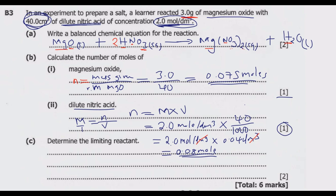Question (c): determine the limiting reactant. To determine the limiting reactant we need the balanced equation from question (a) — if you didn't get that correct you will struggle here. From the balanced equation: one mole of magnesium oxide requires two moles of dilute nitric acid, and produces one mole of magnesium nitrate and one mole of water. The limiting reactant is whichever reactant is used up first, forcing the reaction to stop. The other is the reactant in excess.